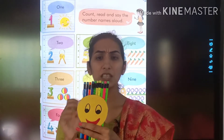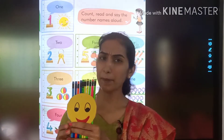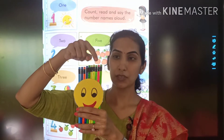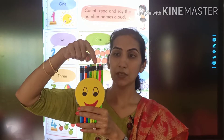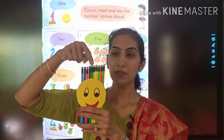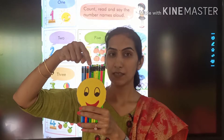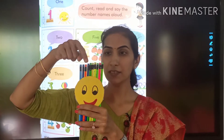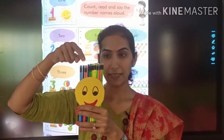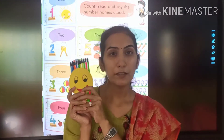Today we will see how many members are there in a smiley family. 1, 2, 3, 4, 5, 6, 7, 8, 9, 10. A colourful family.